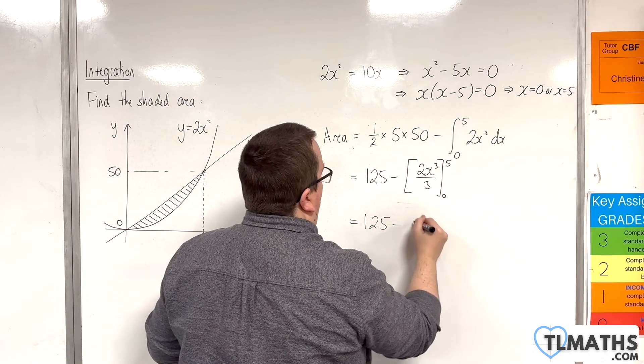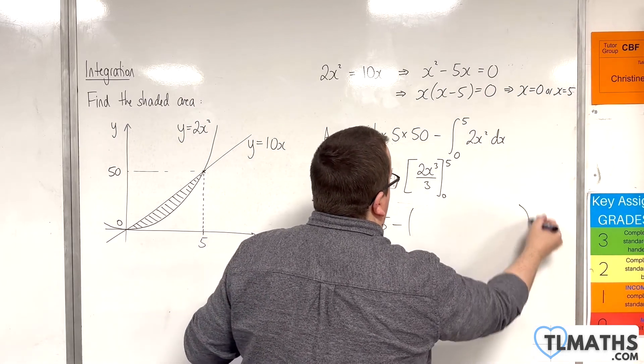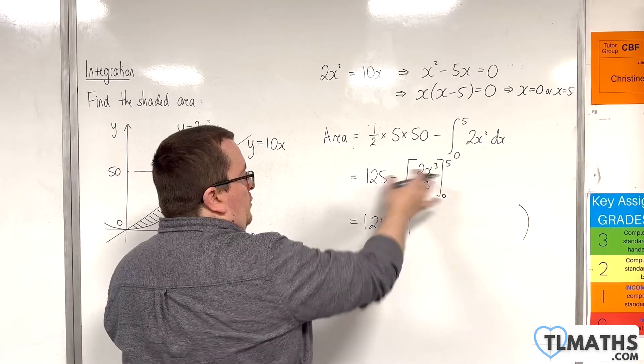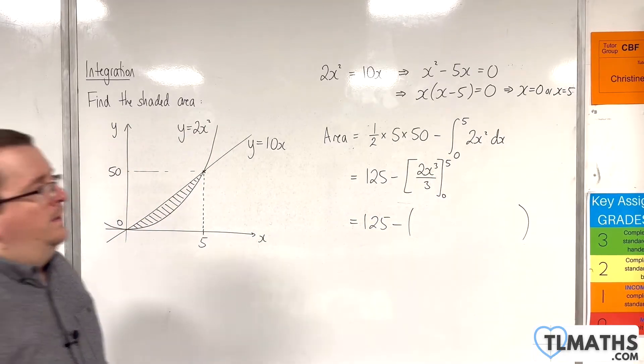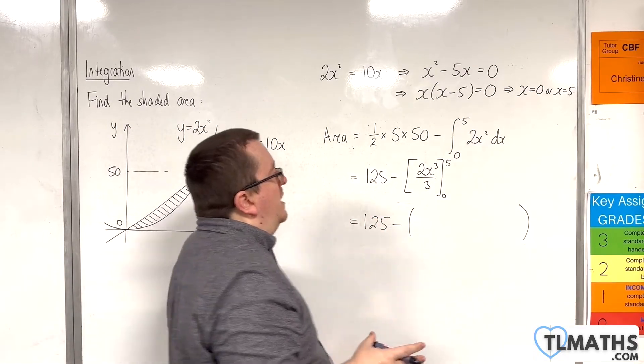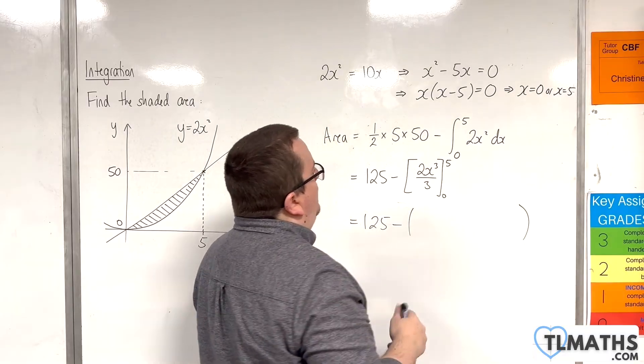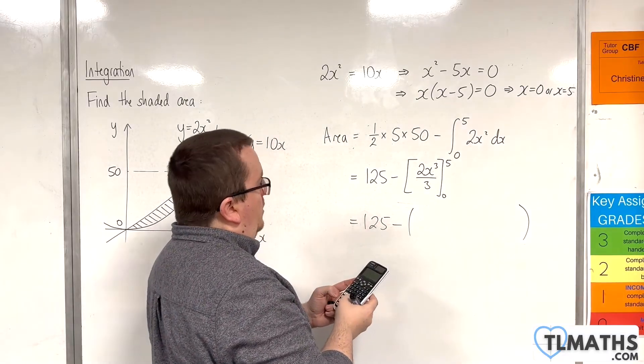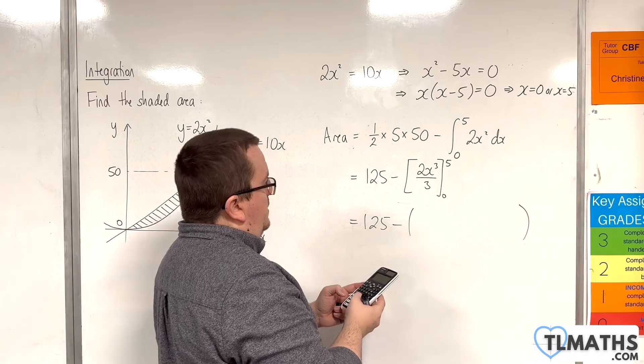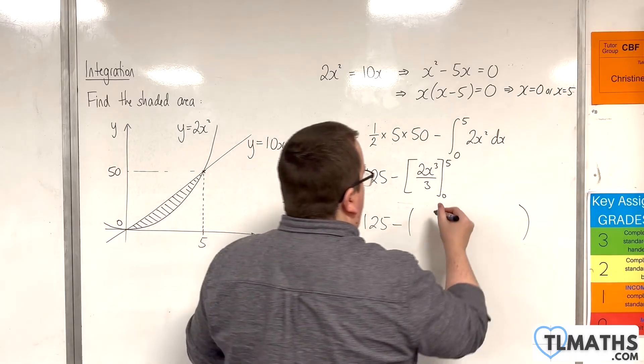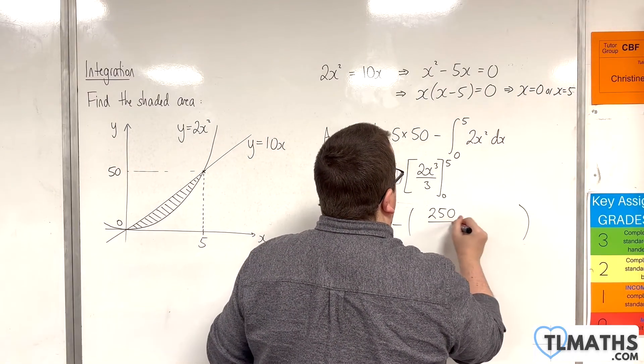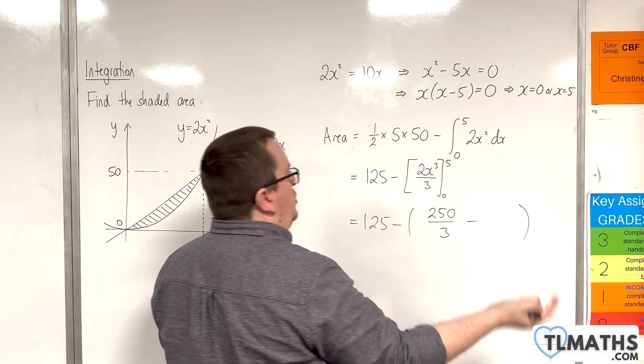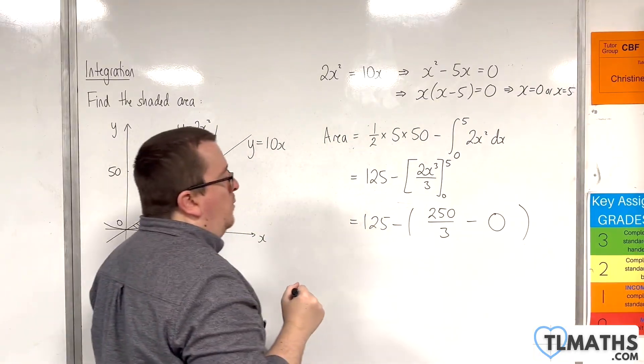So 125 take away. Now I'm going to open up a big bracket to include the evaluation of this, just so I don't get minus signs mixed up. So substituting in 5, we're going to get 2 lots of 5 cubed divided by 3. So that's 250 over 3. And then substituting in 0, I'm going to get 0. So that's what I'm taking away.